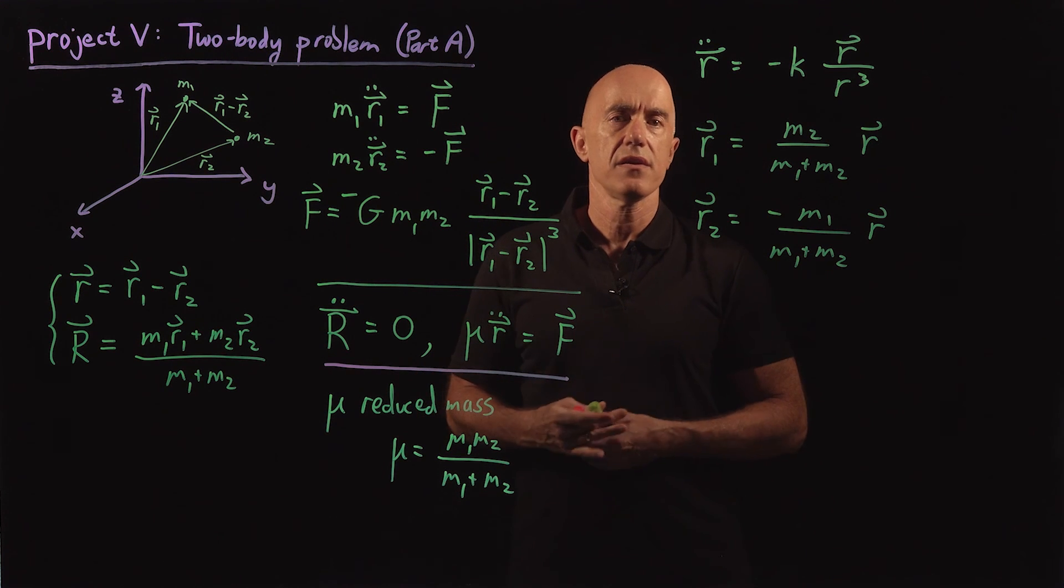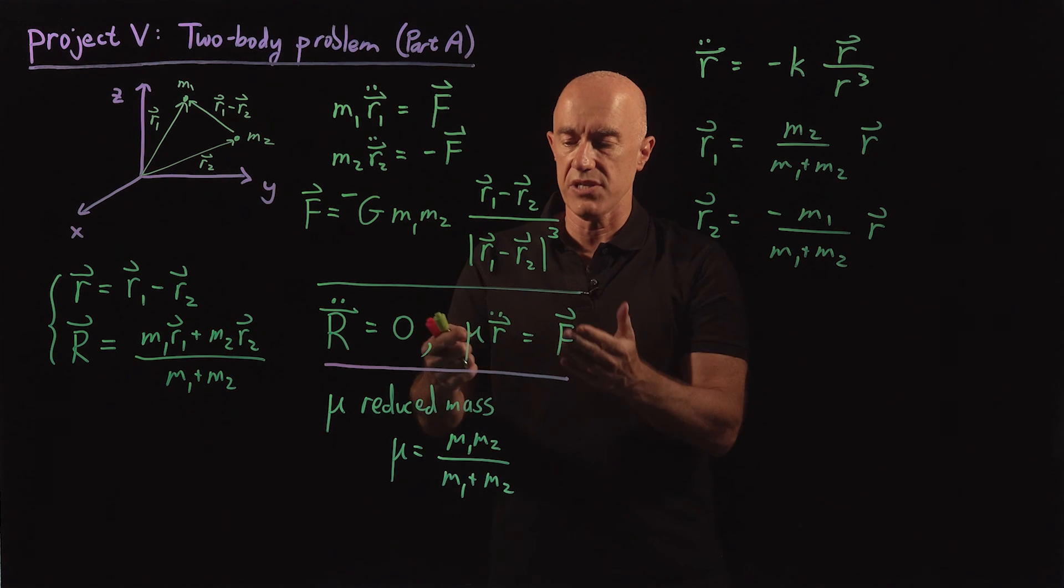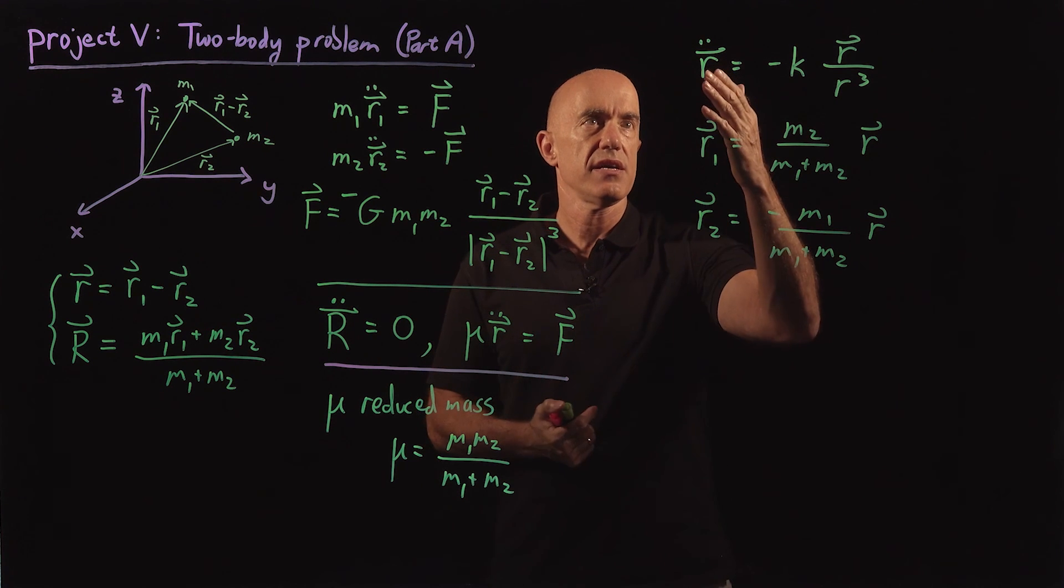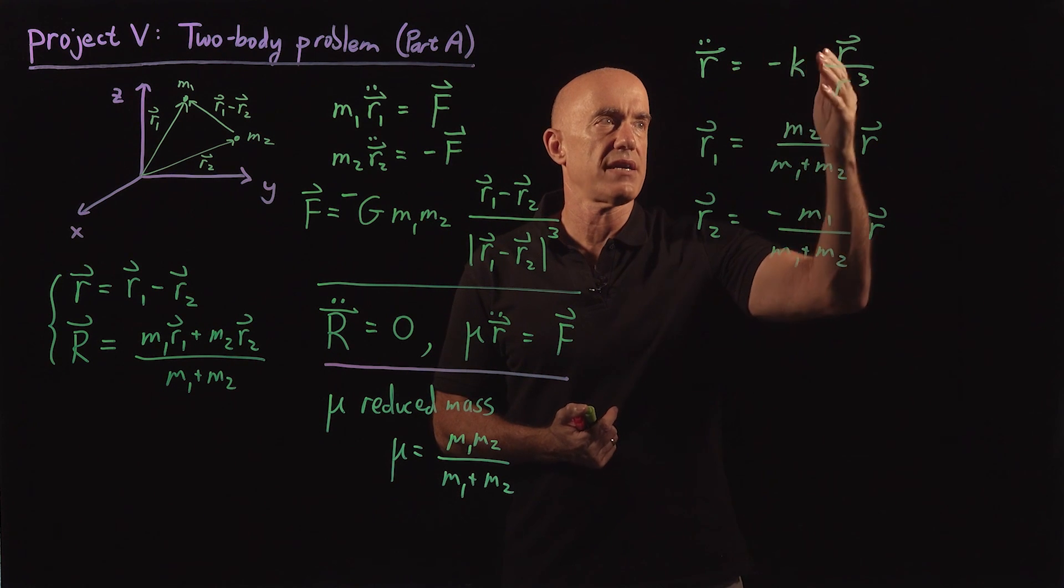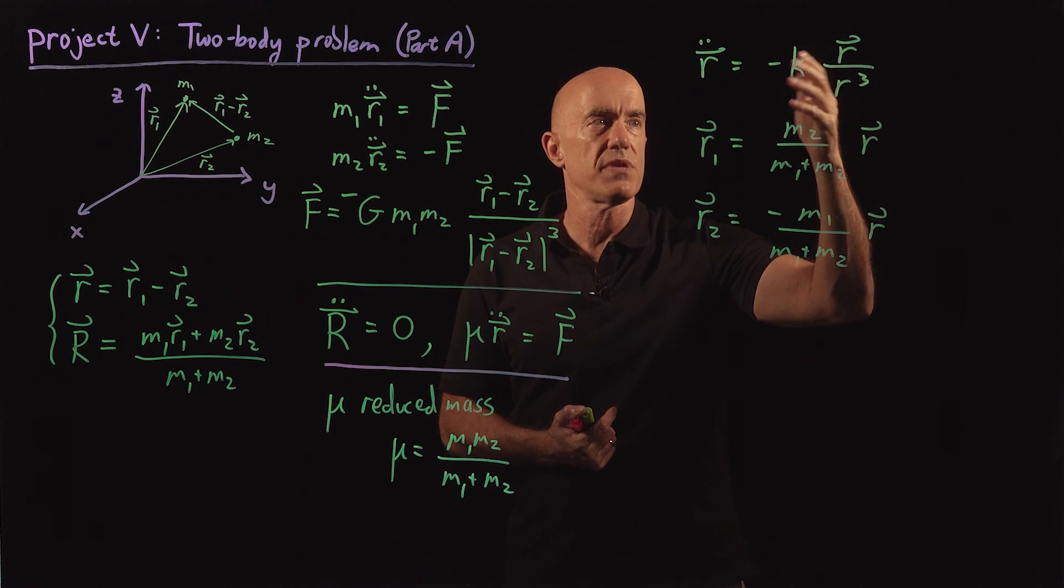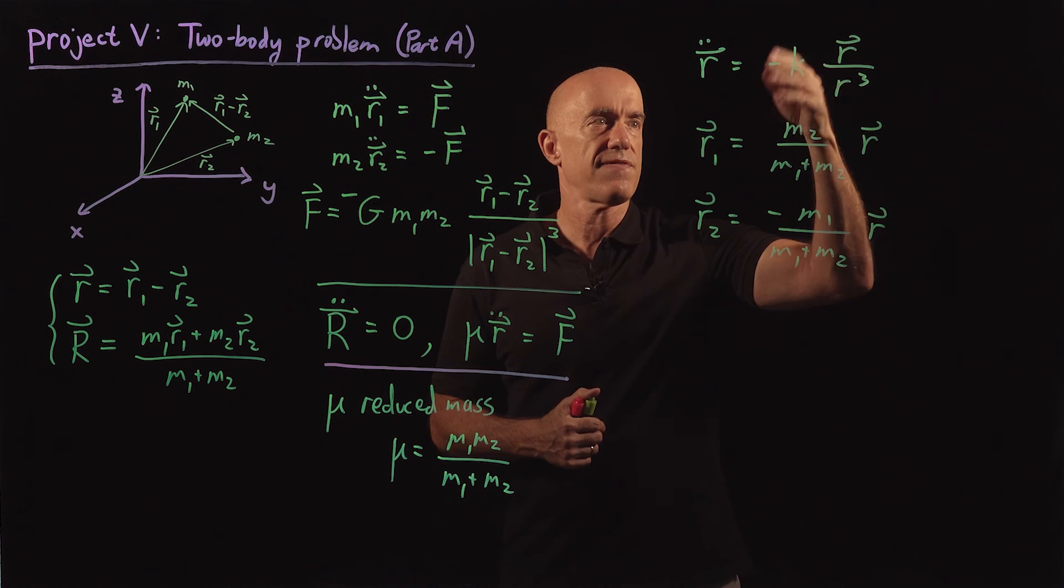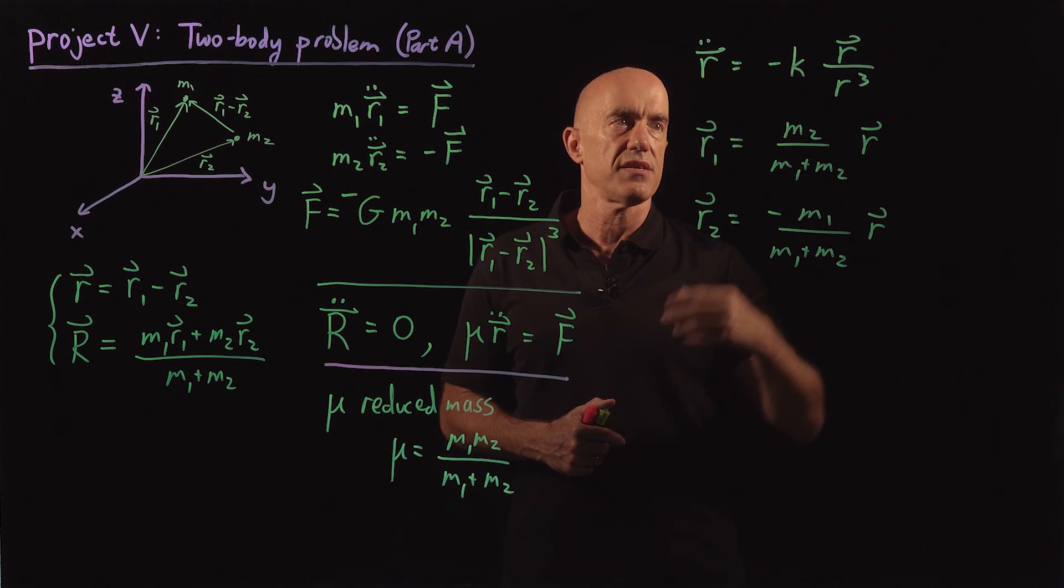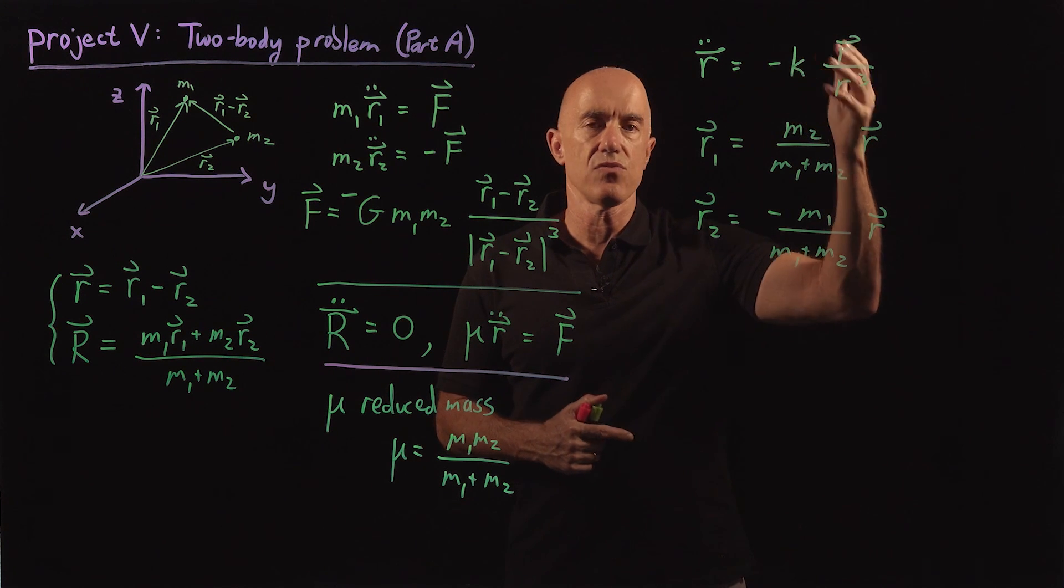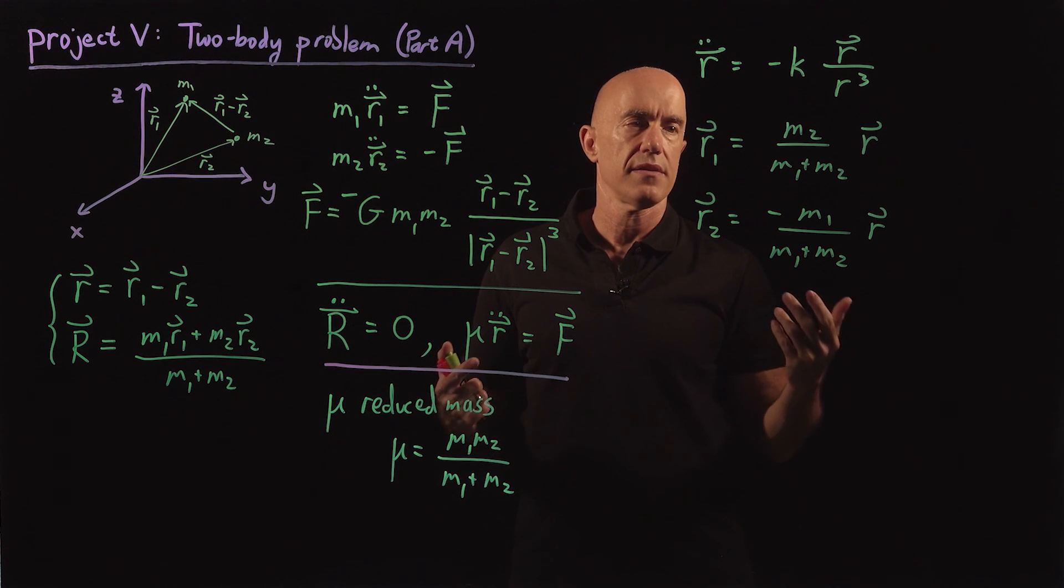That won't really matter, because we'll see that this equation, the second equation here, is just r double dot equals minus k r over r cubed. K is a constant that depends on the masses. But in fact, we can non-dimensionalize the equations so that k will essentially become one.